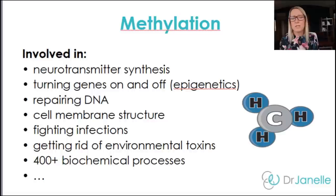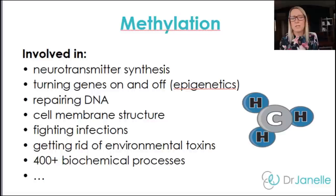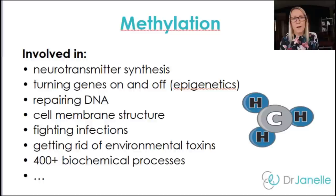So what does methylation do in the body? It's a very simple biochemical process — basically, it's adding a methyl group to molecules in the body. As you can see in the image, a methyl group is a carbon and three hydrogens. There are over 400 biochemical processes affected by methylation. Adding a methyl group may help neurotransmitter synthesis, turn genes on and off, repair DNA, support cell memory structures, fight infection, and get rid of environmental toxins.